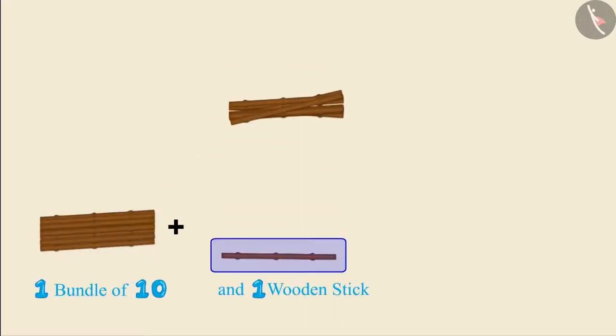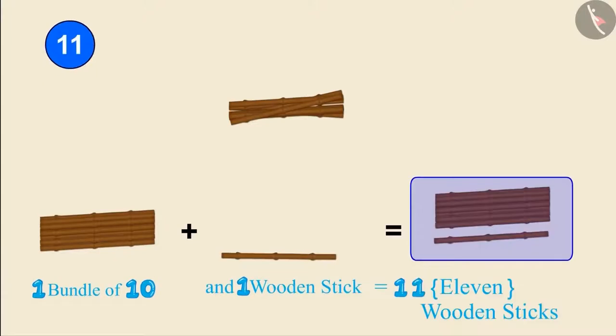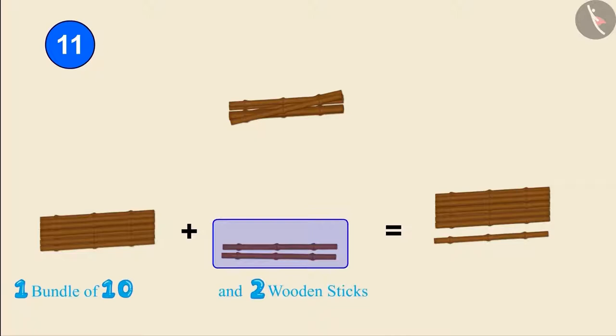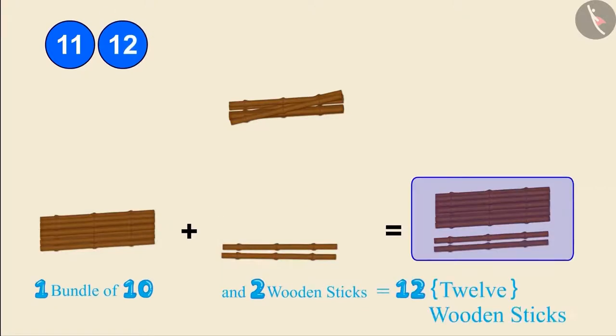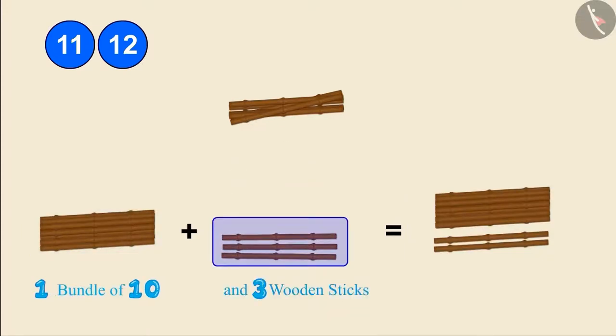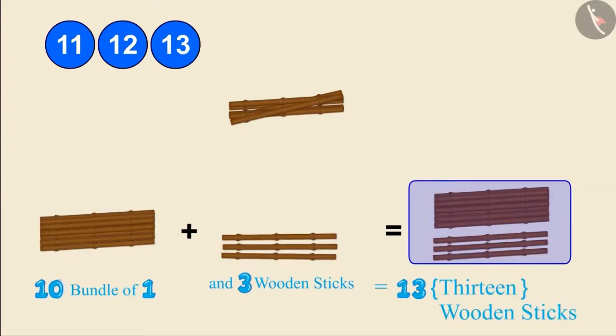One bundle of 10 and one more wooden stick make 11 wooden sticks. One bundle of 10 and two wooden sticks make 12 wooden sticks. One bundle of 10 and three wooden sticks make 13 wooden sticks.